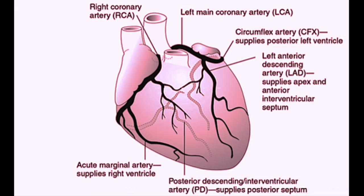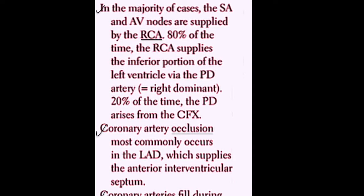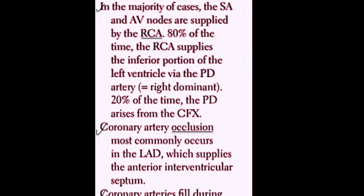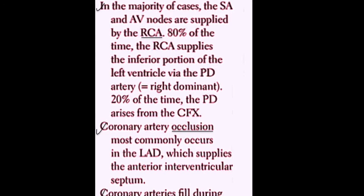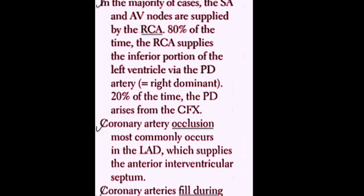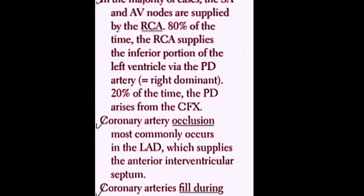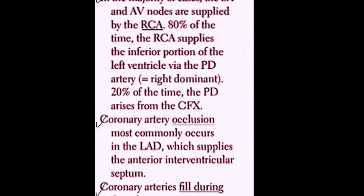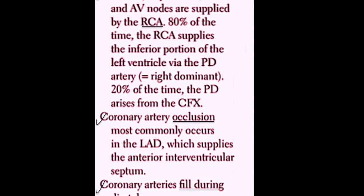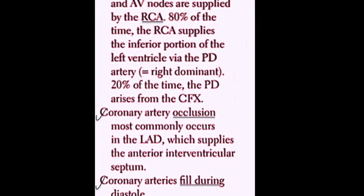In the majority of cases, the sinoatrial and atrioventricular nodes are supplied by the right coronary artery. As mentioned before, 80% of the time the right coronary artery supplies the inferior portion of the left ventricle via the PDA — that means right dominant system. The other 20% of the time, the PDA arises from the left circumflex artery.